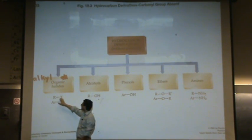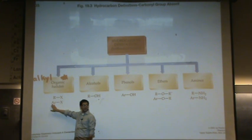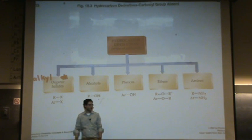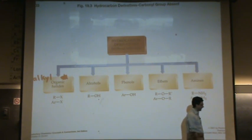So again, chlorine, bromine, or iodine. Or an arene. So if you have an arene attached to a halide, that's also called an organic halide, or an alkyl halide.